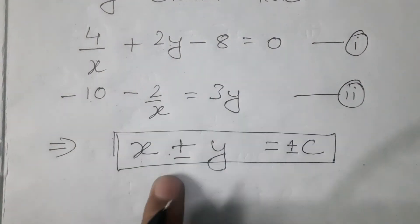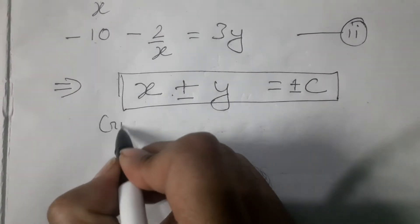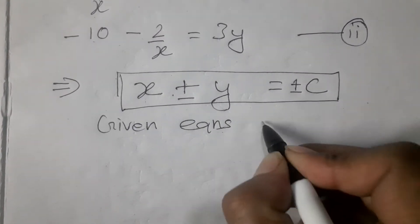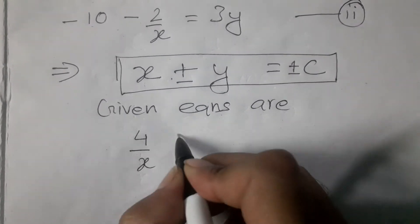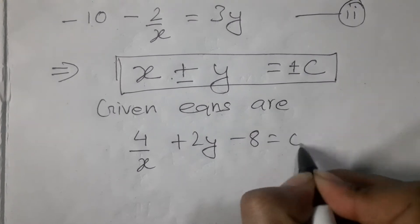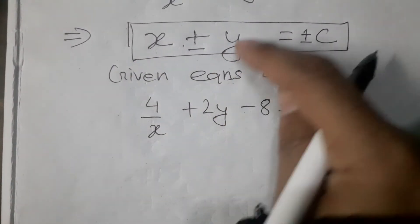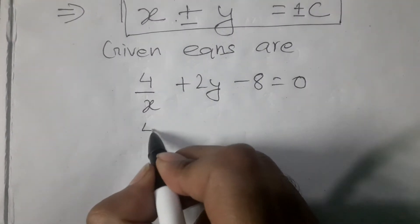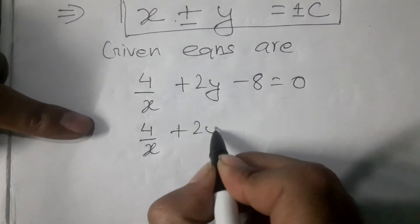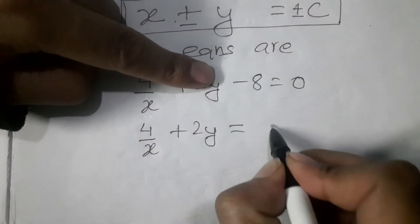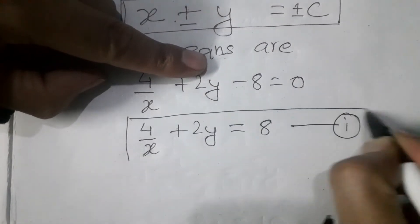Equation 1 must be in proper order. We will manage the given equations. Given equation 1: 4 by x plus 2 by y minus 8 equals 0. We will use this format — x first, y second, and constant number goes to the other side. So 4 by x is okay, 2 by y is okay, and 8 is equal to 8.